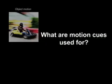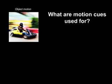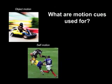Motion cues in the visual world are used primarily for two purposes. The first is to detect the direction of things moving in the world, due either to object motion or to self-motion.